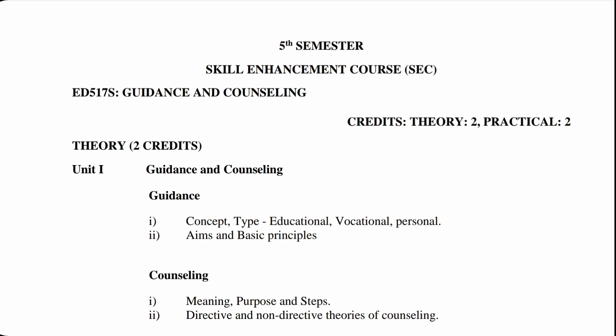Theory, 2 credits. Unit 1: Guidance and Counseling. Guidance — Number 1: Concept of Guidance; Types of Guidance, i.e., Educational, Vocational and Personal Guidance. Number 2: Aims of Guidance and Basic Principles of Guidance.